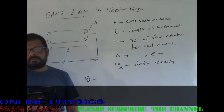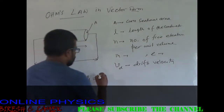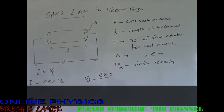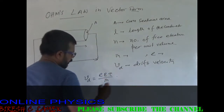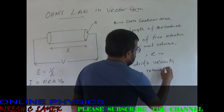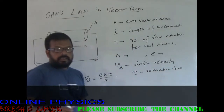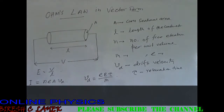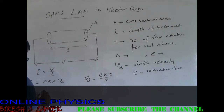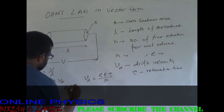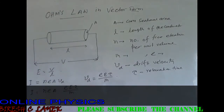We have also established an expression for drift velocity v_d, which equals e·E·tau divided by m, where tau is the relaxation time — that is, the average time between two successive collisions. We can write I equals n·e·A into e·E·tau divided by m.